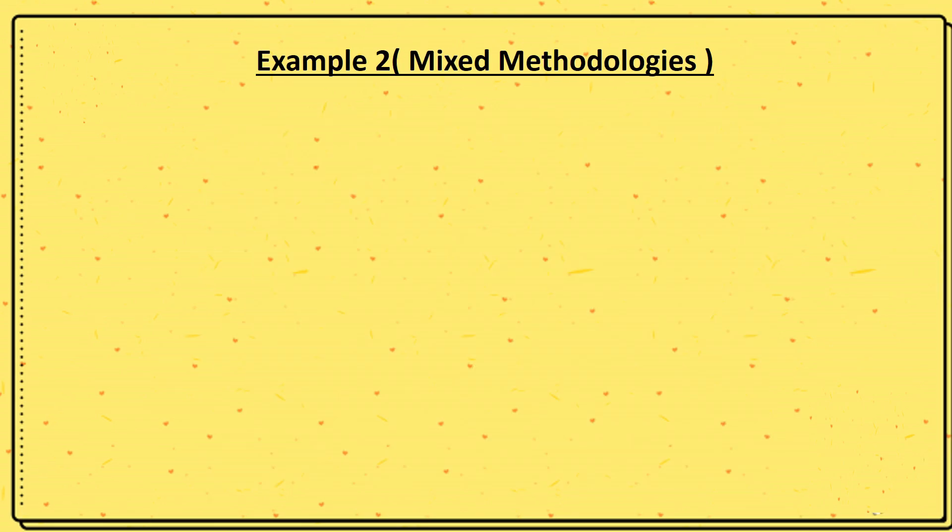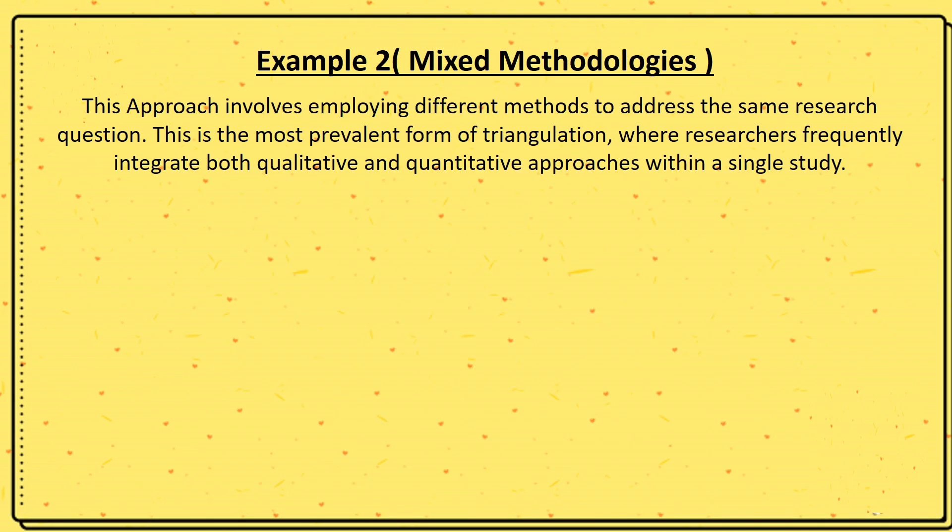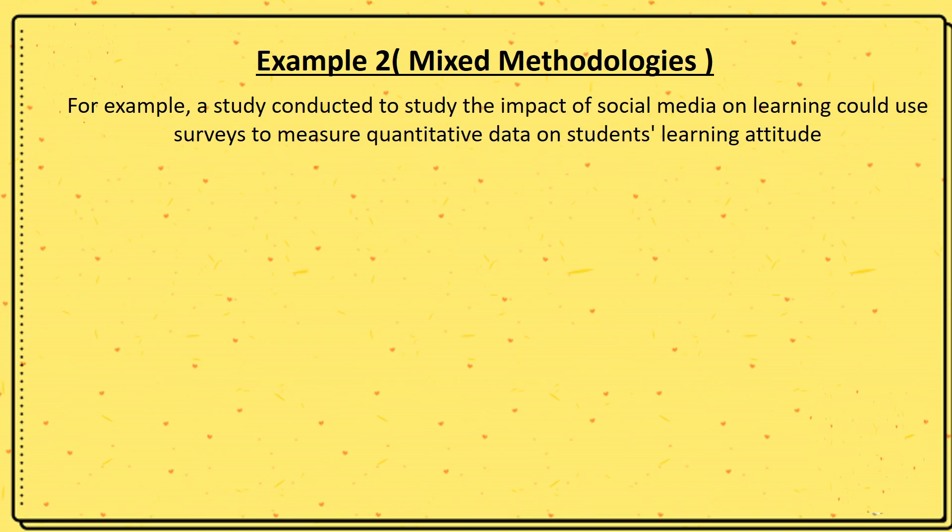Example number two: mixed methodologies. This approach involves applying different methods to address the same research question. This is the most prevalent form of triangulation. For example, a study conducted to study the impact of social media on learning could use surveys to measure quantitative data on students' learning attitude.